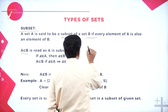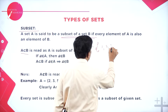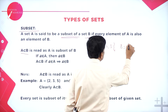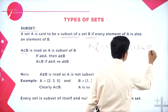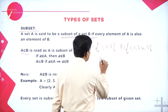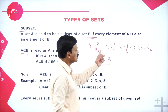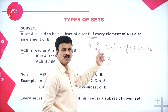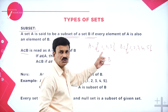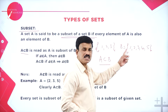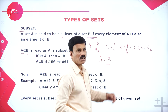Let us consider an example. If A = {1, 2, 3} and B = {1, 2, 3, 4, 5}, then we can say A is the subset of B. All the elements of A — 1, 2, and 3 — are present in the set B. Therefore, A is the subset of B.